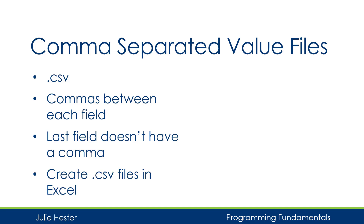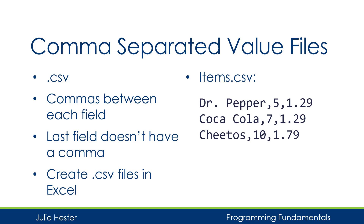CSV files are easy to create. If you have an Excel spreadsheet, you can save it as a CSV file, and Excel will save it as a text file with commas between each column. For the examples in this video, I'll be using the file items.csv. This file has three records. The first field is a string, which does have spaces embedded in it, followed by a comma and an integer, then a comma and a double.